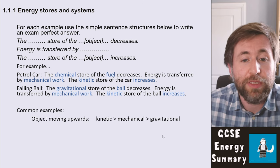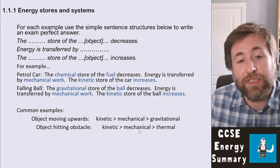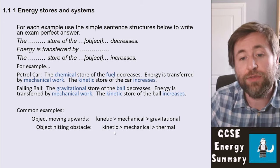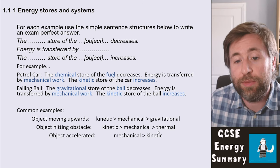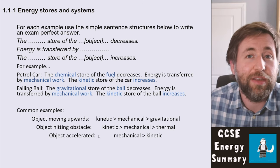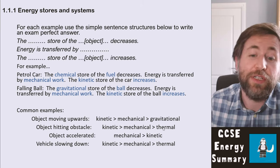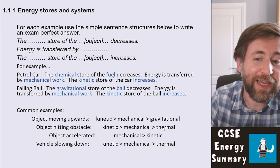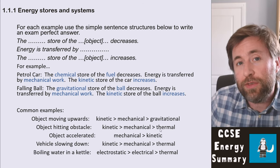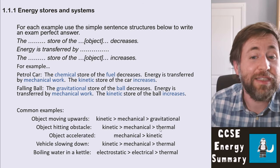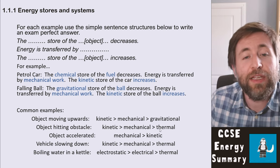Other common examples: an object moving upwards starts in the kinetic store, transferred mechanically to a gravitational store. An object hitting an obstacle starts with kinetic energy, undergoes a mechanical transfer, and ends up heating the surroundings — thermal store. An object being accelerated has a mechanical transfer into a kinetic store. A vehicle slowing down has kinetic energy mechanically transferred by the brakes to the thermal store of the surroundings. Boiling water in a kettle starts in the electrostatic store of the mains, and energy is transferred by electrical working through the heating element to the thermal store of the water.